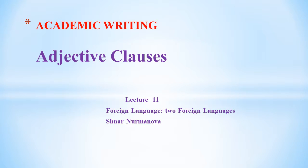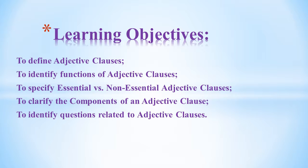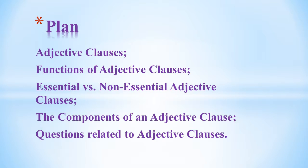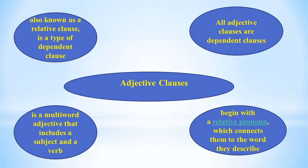Academic Writing, Lecture 11, Department of Foreign Languages. The theme of the lecture is adjective clauses. The objectives are to define adjective clauses, identify their functions, specify essential and non-essential adjective clauses, clarify the components of an adjective clause, and identify questions related to adjective clauses. The lecture plan covers: adjective clauses, functions of adjective clauses, essential vs. non-essential adjective clauses, components of an adjective clause, and questions related to adjective clauses.